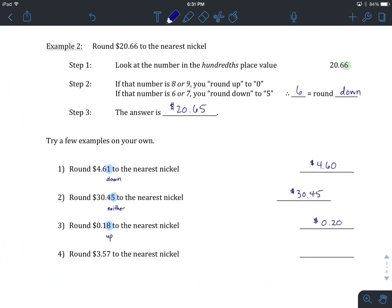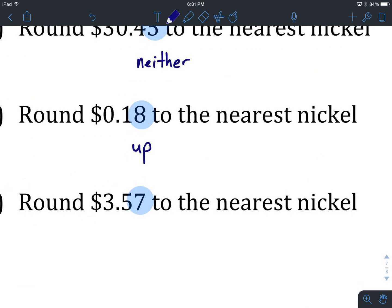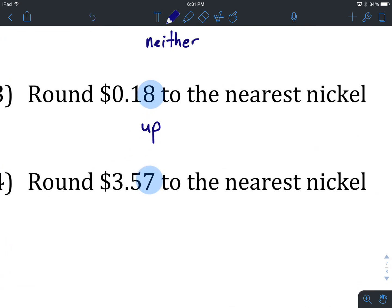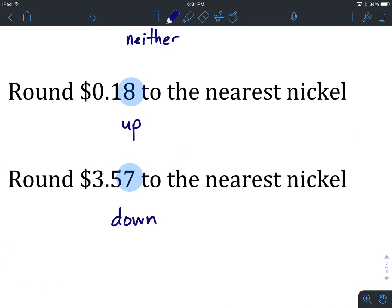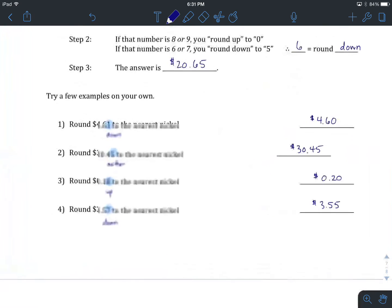$3.57 to the nearest nickel. There's our hundredths spot. We have a seven. We're going to have $3.55 or $3.60 depending on the number that we've highlighted. It's a seven. Sixes and sevens tell us that we are going to round down. It's not over halfway to 60. So we are going to get $3.55 as our final rounding.